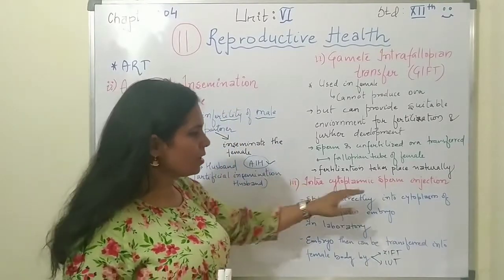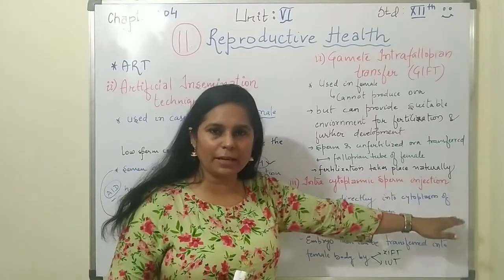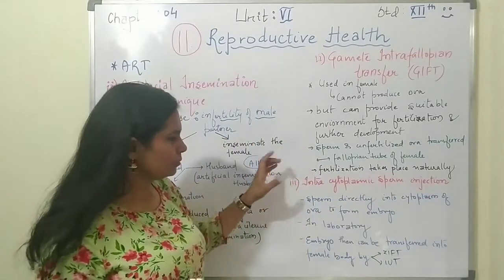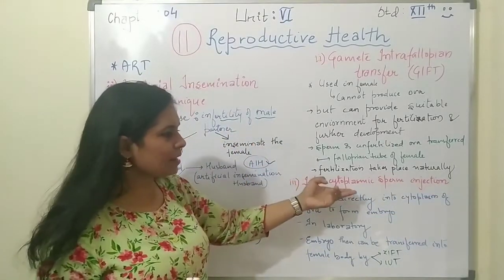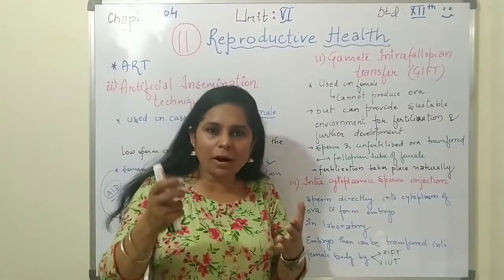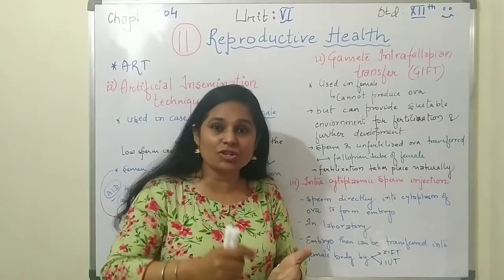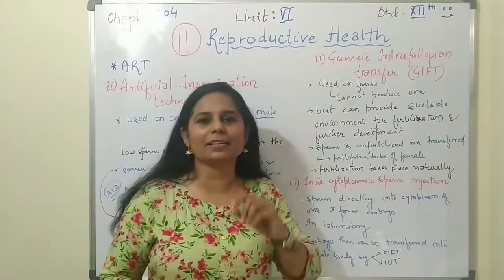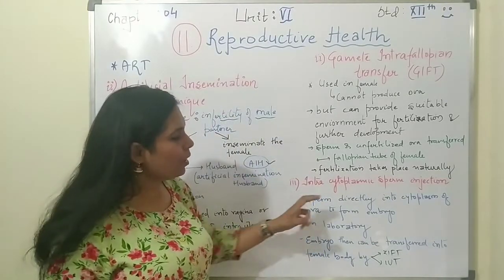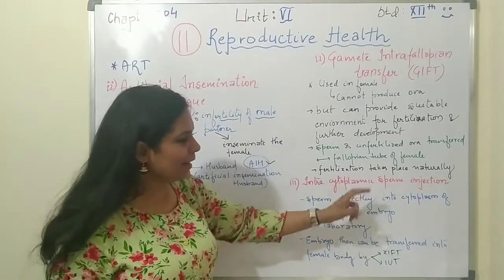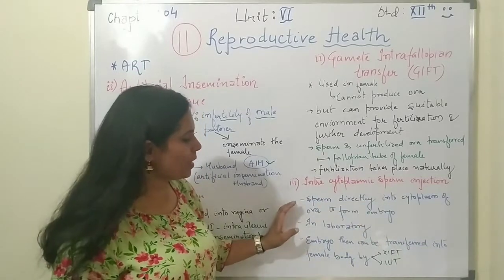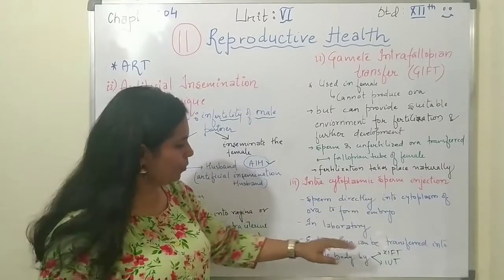The next technique is Intracytoplasmic Sperm Injection, or ICSI. In this technique, sperm is directly injected into the cytoplasm of the egg or ova to form an embryo in the laboratory.